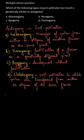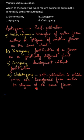The third one is apogamy, which is development without fertilization. And the last one is cleistogamy, which is self-pollination in which pollen are transferred from anther to stigma of the same flower.